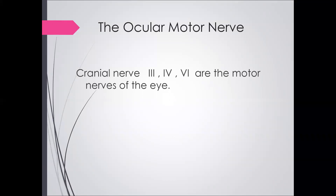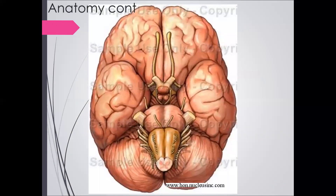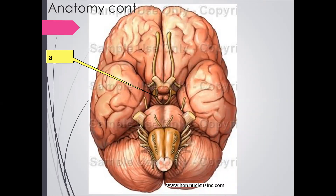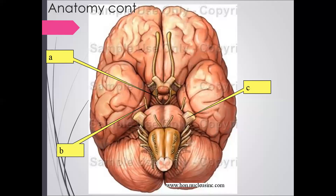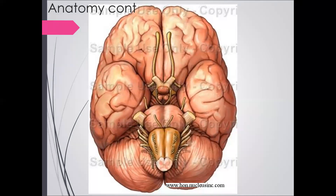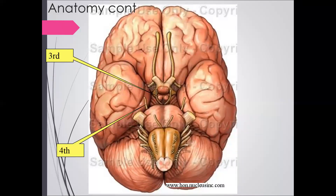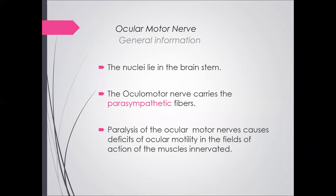In this picture, try to test yourself and tell me what is this nerve. Write it on your piece of paper — what is nerve A, B, C, and D? So this is the third nerve (oculomotor), fourth nerve (trochlear), fifth nerve (trigeminal), and the sixth nerve (abducent). Today I am talking about the oculomotor nerve.